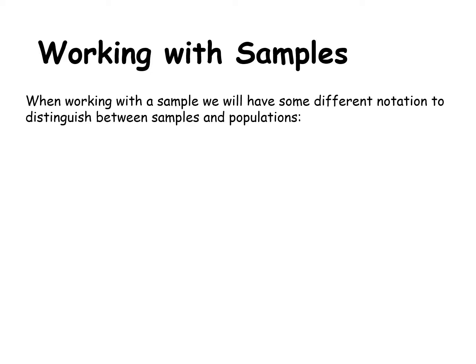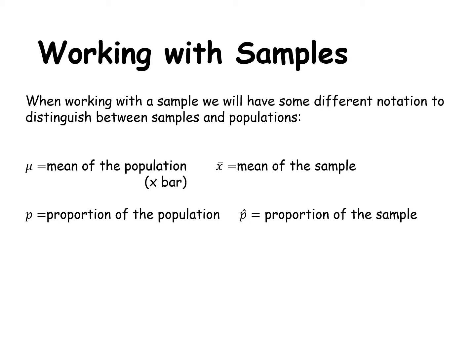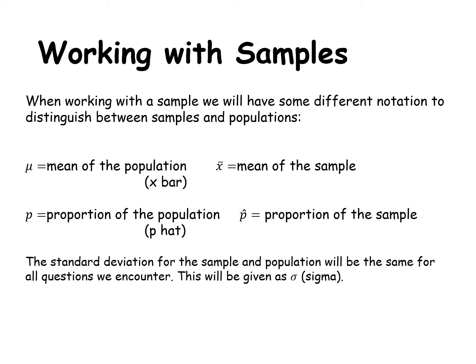When we work with samples we use different notation to distinguish between samples and populations. Mu (the Greek letter M) is the mean of the population, while x-bar is the mean of the sample. P is the proportion — remember proportion is the overarching term covering fractions, decimals, or percentages — and p-hat is the proportion of the sample. The standard deviation for the sample and the population will be the same for all questions we encounter, given as sigma.